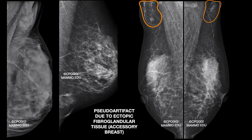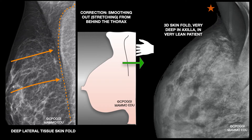Ectopic or accessory breasts can be very different from those in the typical location, as in these other examples. This fold is due to improper stretching and smoothing out of the deep lateral tissues. In these cases we have to repeat, because the fold involves glandular tissue and the correction should be done from behind — very carefully, paying attention not to lose tissue.